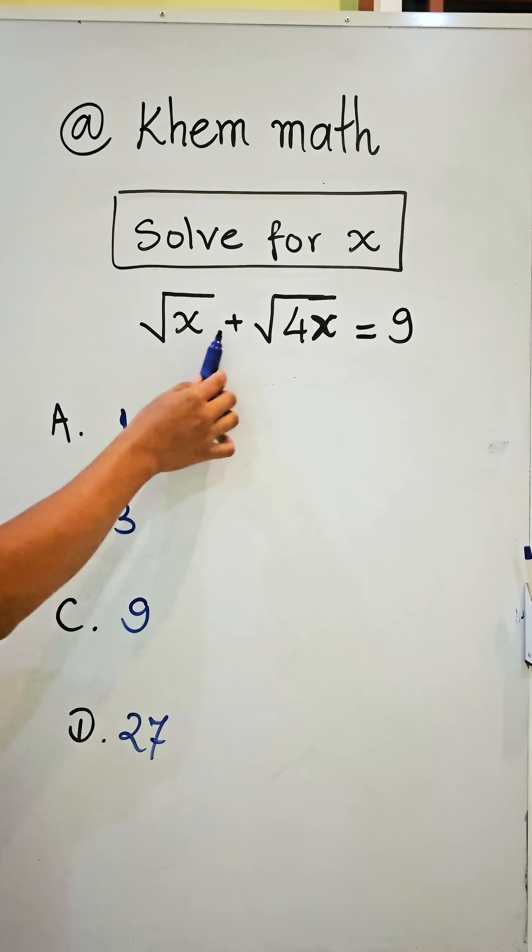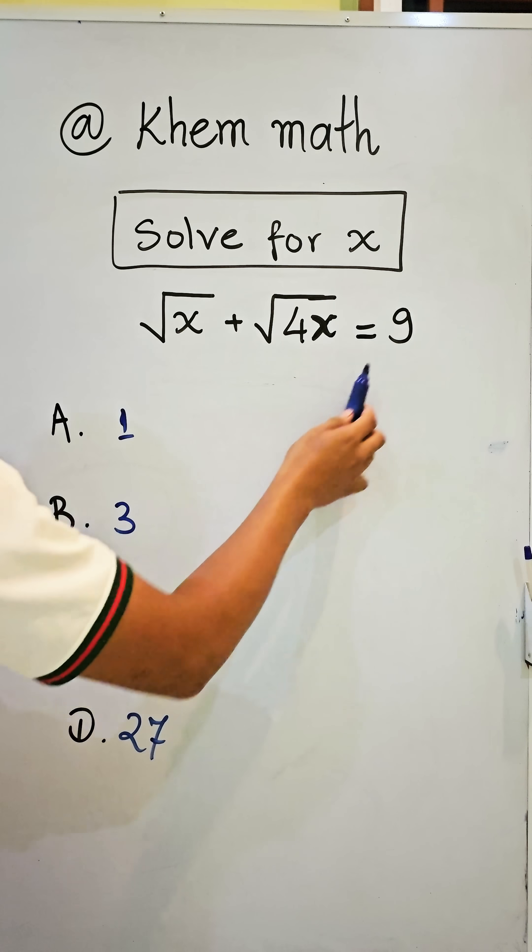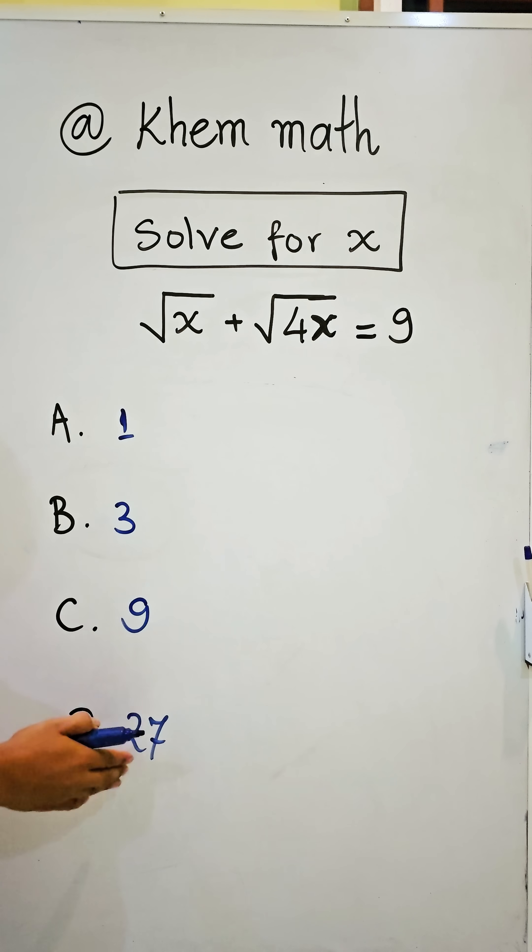Solve for x: square root of x plus square root of 4x equals 9. Let us answer: 1, 3, 9, 27.